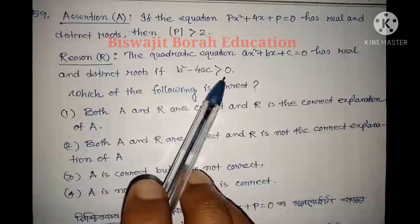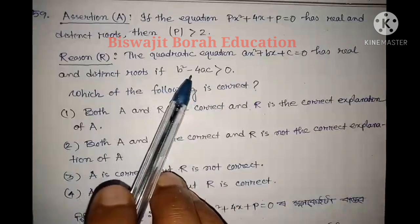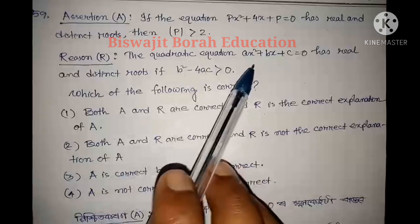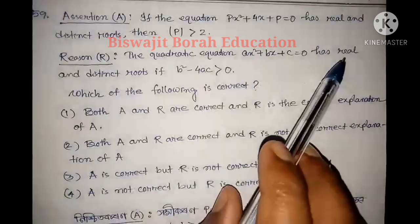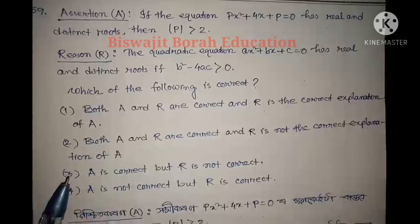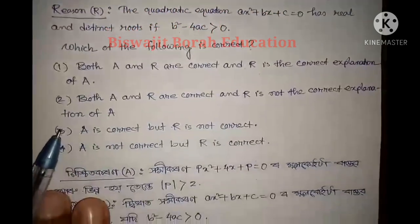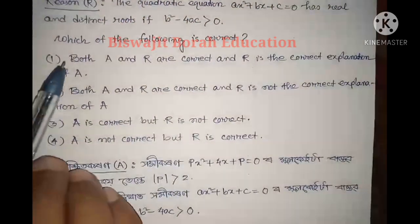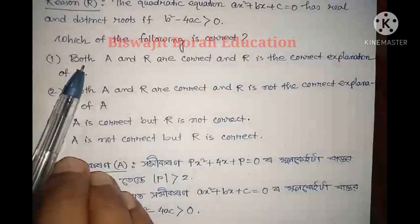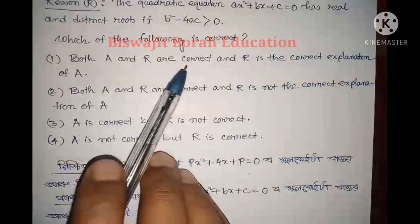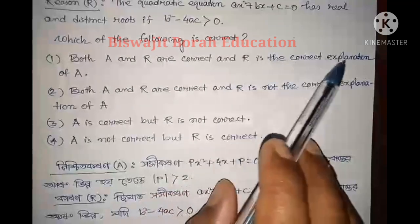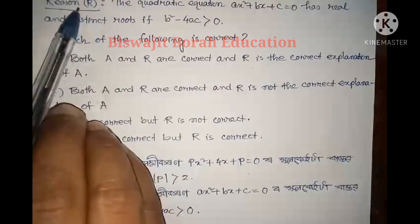So if b squared minus 4ac is greater than 0, then the real roots are distinct. Which of the following is correct? Number 1: both assertion A and reason R are correct, and R is the correct explanation of A.